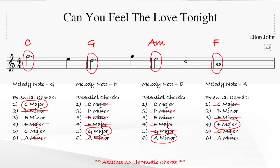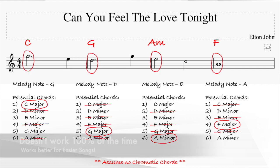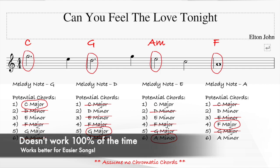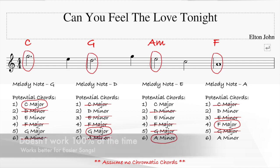Notice that guessing the first chord seems to be the most uncertain, but as we figure out the other chords and progressively collect more information, it becomes easier to guess the chords behind. Of course, this method does not work all the time — it tends to work more for easier pop songs rather than the more difficult jazzier ones, as those songs like to experiment with more complex chords and notes.